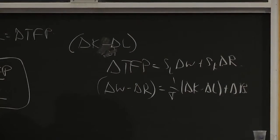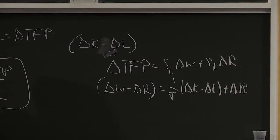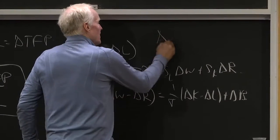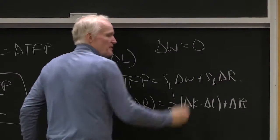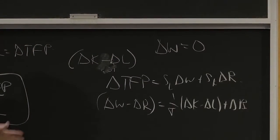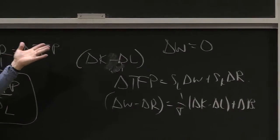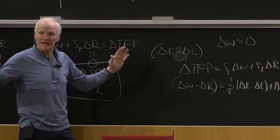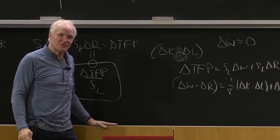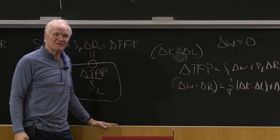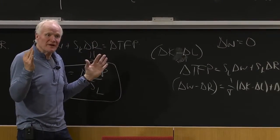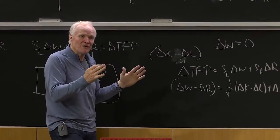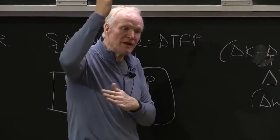Except Malthus had a very different theory of supply. Malthus' theory of supply was delta W equals 2. His theory of the world was, if the real wage rate went up, people would just have more kids, and they would keep having more kids until the return to labor went back down to where it started. You can see it's the same model — no different. It's the neoclassical growth model with the roles of labor and capital just split.